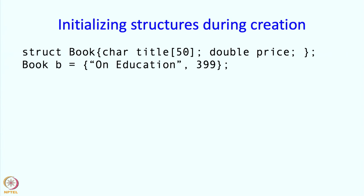The initialization as usual happens through braces and the first element in the braces initializes the first member which is title. So b.title would be set to the string on education. Then the second element in the braces initializes the second member of the structure type book which is price. This initializes b.price to 399.